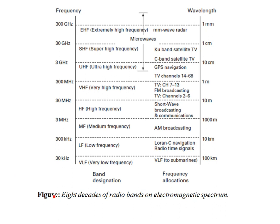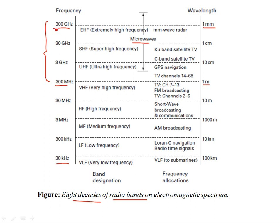This figure shows the eight decades of radio bands. RF signals have frequencies ranging from 30 kilohertz all the way up to 300 gigahertz. The upper four bands are in the microwave range, with wavelengths from one meter down to one millimeter, corresponding to frequencies from 300 megahertz up to 300 gigahertz.